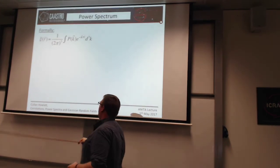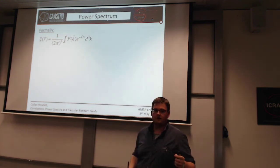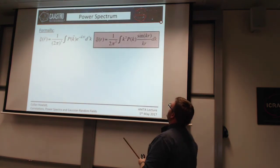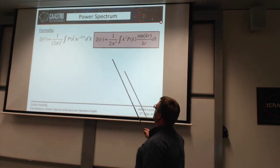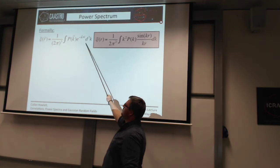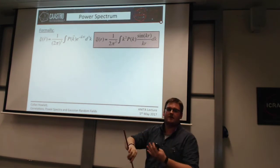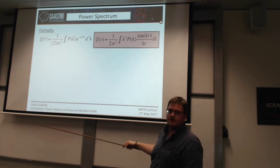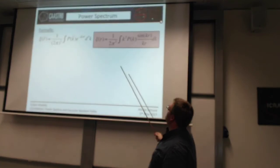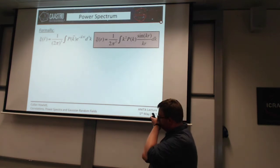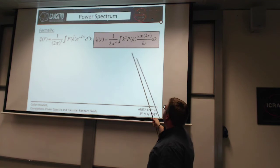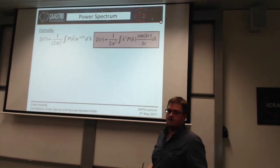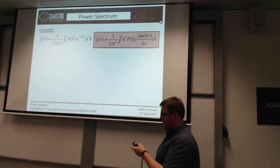This is for three-dimensional fields. Throughout this talk I've used the idea of a field which is homogeneous and isotropic, so this equation becomes even easier: instead of a 3D integral, I integrate over the surface of a sphere, giving 4π k² δk as the integral measure. This gives you the transform from the power spectrum of a homogeneous and isotropic field to the correlation function.